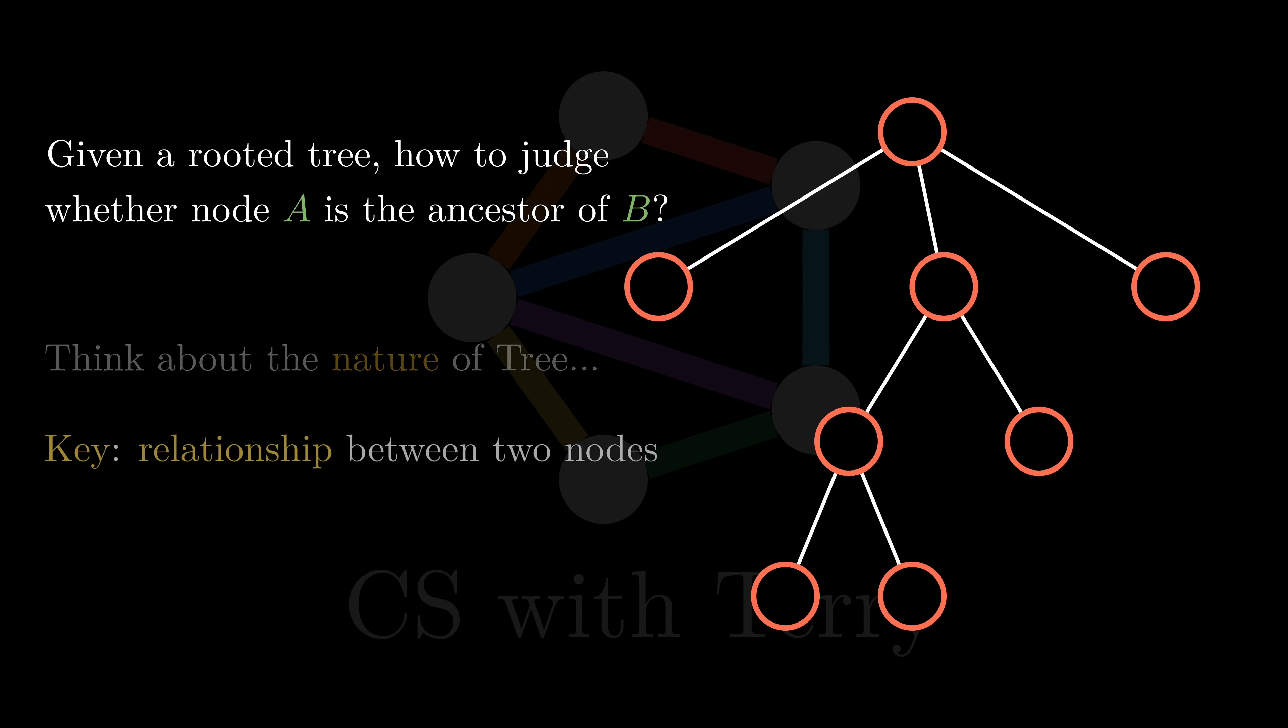The key of the problem is to check the relationship between two nodes. When talking about relationships, what would come to your mind? Maybe we can try sorting the nodes, which can establish order for all the nodes. Have you learned any way to sort the nodes in a tree?